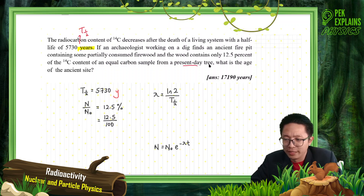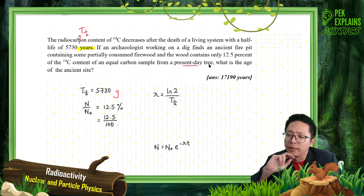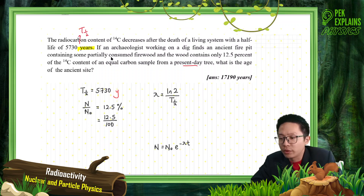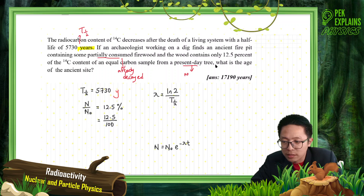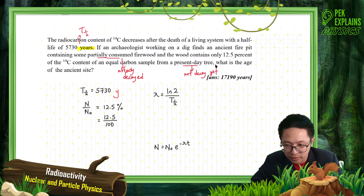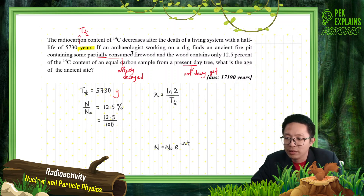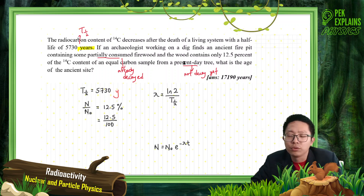So what does this mean? The partially consumed firewood has already decayed for some time, whereas the present-day tree has not decayed yet — it's still fresh. The carbon-14 in the firewood has only 12.5% of the radioactive nuclei compared to the present-day tree.